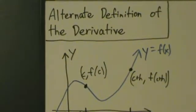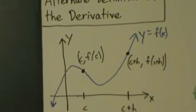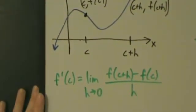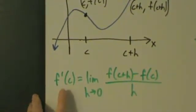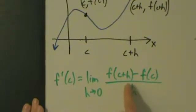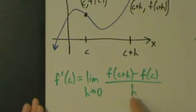Let's go ahead and start talking about the alternate definition of the derivative. So we've seen this definition quite a bit: f prime of c equals the limit as h goes to 0 of f of c plus h minus f of c, all divided by h.